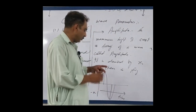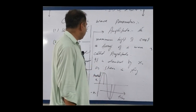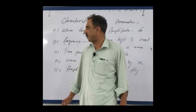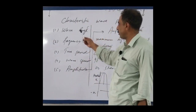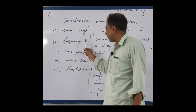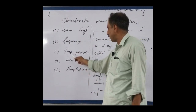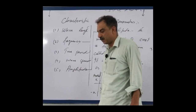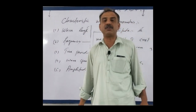Amplitude is also a parameter of the wave. So these five — wavelength, frequency, time period, wave speed, and amplitude — are the characteristics of a wave. When we discuss waves, these five points are the focus, and they are all interrelated with each other.